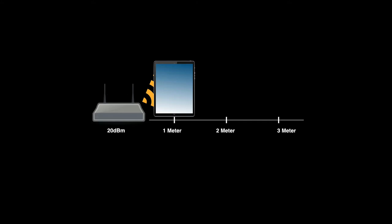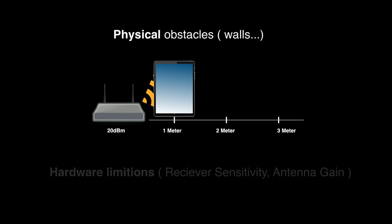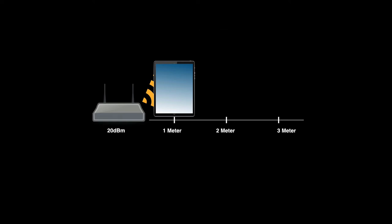Some of them are due to physical obstacles. Some of them are due to hardware limitations, such as receiver sensitivity and antenna gain. And some of it involves physics.